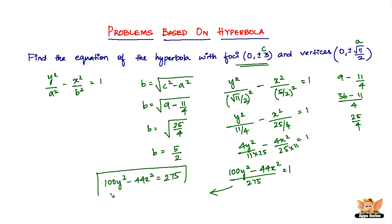So therefore, this is the required equation of the hyperbola in question. The equation of the hyperbola with foci (0, ±3) and vertices (0, ±√11/2) is 100y² - 44x² = 275. Alright, so that ends this problem.